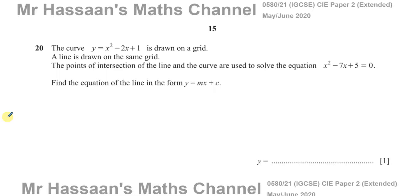This question tells us about the curve y equals x squared minus 2x plus 1, drawn on a grid. A line is drawn on the same grid. The points of intersection of the line and the curve are used to solve the equation x squared minus 7x plus 5 equals 0.